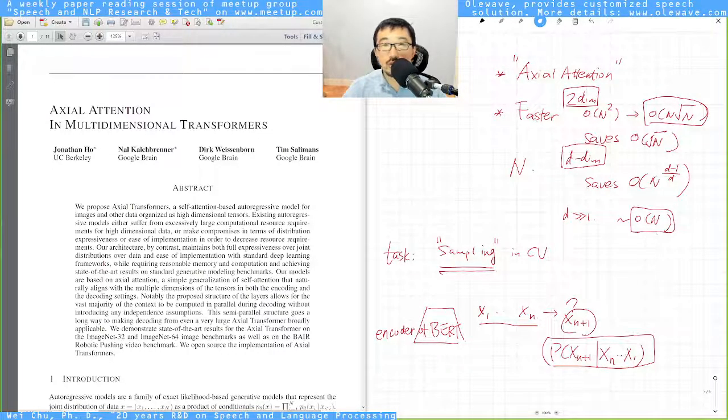The main contribution of their work is they remove the conditional independence assumption compared to other algorithms. Although other algorithms are fast, they have stronger constraints or assumptions on the input data. This work achieves faster results even when using the full context in calculating the transformer.